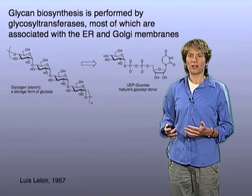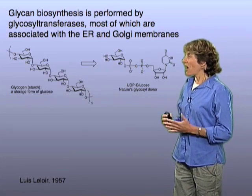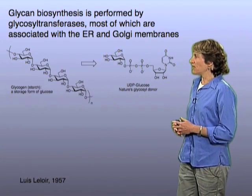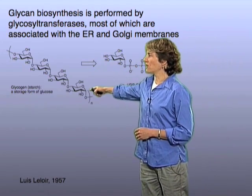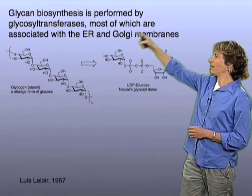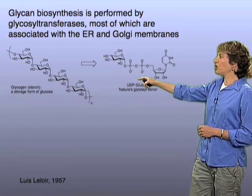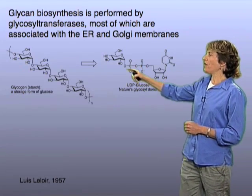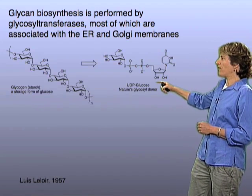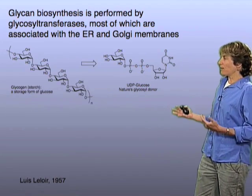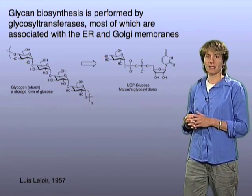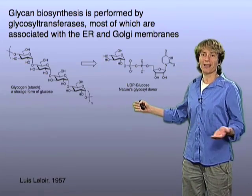A point of historical interest: the discovery of this mechanism of biosynthesis is largely attributed to Luis Leloir, who back in the 1950s discovered that glycogen — a storage form of glucose in vertebrate systems — is built biosynthetically from a precursor in which the glucose is linked to a nucleotide diphosphate. We call this nucleotide sugar UDP-glucose: here's the UDP part, uridine diphosphate, and there's the glucose. This was an important discovery because it suggested a mechanism by which glycans in general might be synthesized, and its importance was recognized with a Nobel Prize.